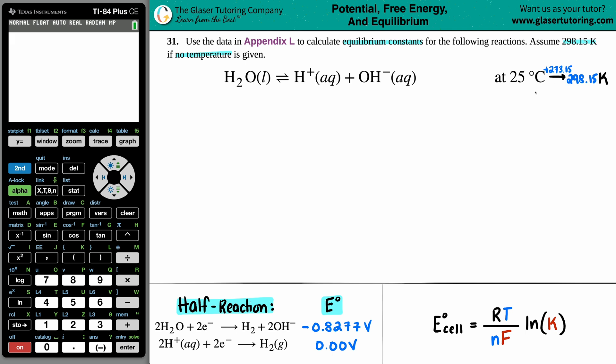They gave us this balanced equation of H2O liquid, which comes to equilibrium with hydronium ion H+ aqueous plus hydroxide OH- aqueous. And they said that I have to use the data in appendix L that's in this textbook to just find an equilibrium constant.